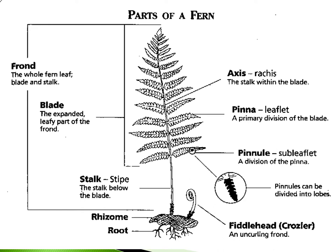The stipe is the stalk below the blade. The rachis is the stalk along which the pinna attach. A pinna is a leaflet or primary division of the blade, and a pinnule is a sub-leaflet or little part of the leaflet itself. Ferns arise from a rhizome, which also has roots that draw up nutrients from the soil. A fiddlehead or crozier is the unfurling frond.